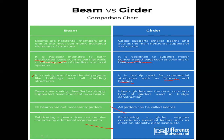Not all beams are necessarily girders, but all girders can be called beams. A beam can never be called a girder, but a girder can be called a beam because it performs the same function as a beam. However, a beam can't perform the same function as a girder, which is why girders can be called beams but beams are not necessarily girders.